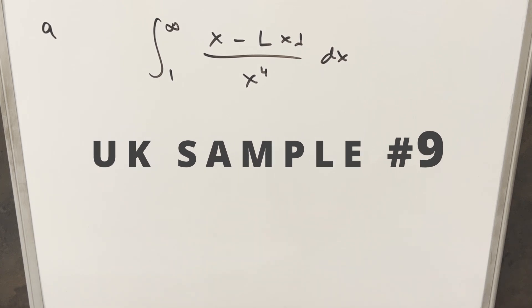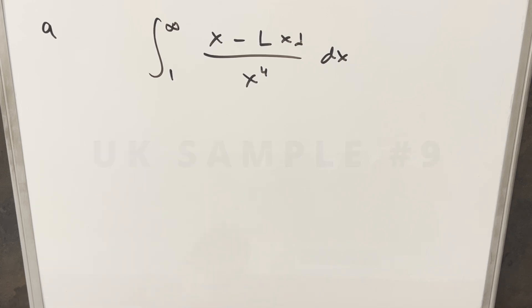We have here today a really interesting integral. This one's from the UK Integration Bee, problem number nine. We have the integral from one to infinity of x minus the floor of x, over x to the fourth, dx.